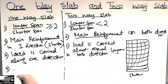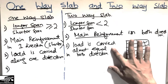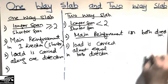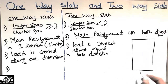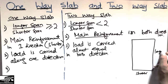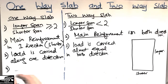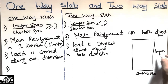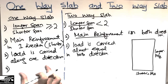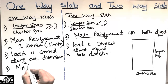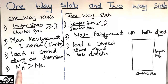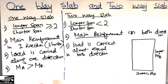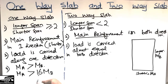The last difference between these two is about the bending moment. Considering this slab example with its shorter span and longer span: the moment demand along the shorter direction is represented by Ma and the moment demand along the longer direction is represented by Mb. In a one-way slab, Ma is always greater than Mb, which is why we provide main reinforcement only in the shorter direction.